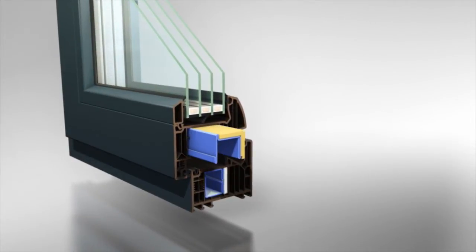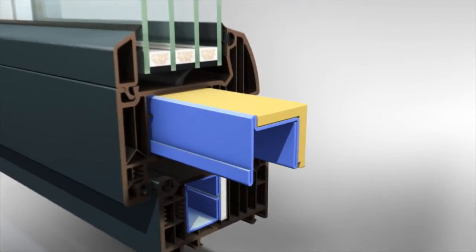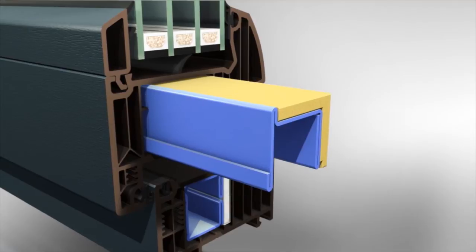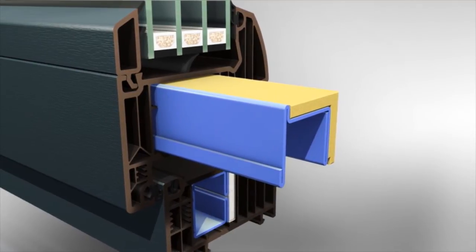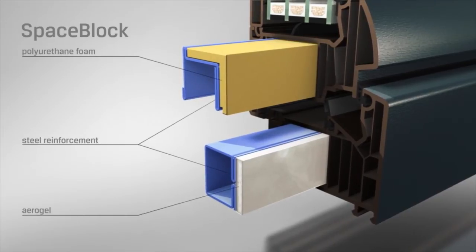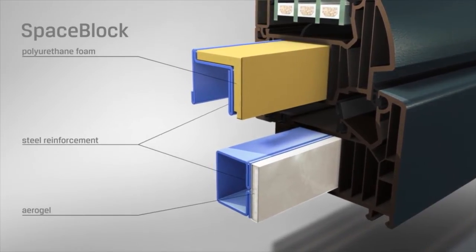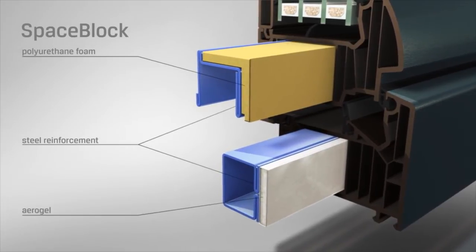The innovative thermal reinforcement system of Wienergetik Premium Passive is a combination of steel reinforcement distinguished by high rigidity and the unique space block thermal barrier. This consists of the aerogel used in the frame and a layer of polyurethane foam mounted in the sash.